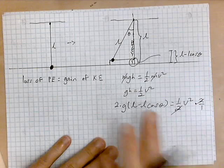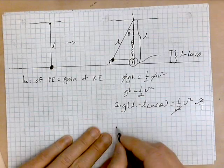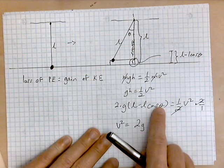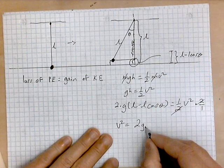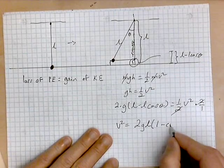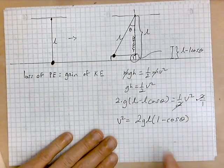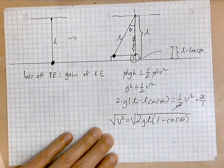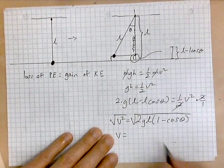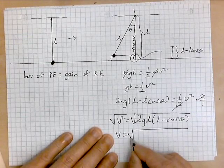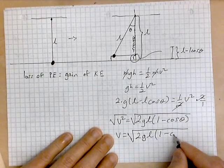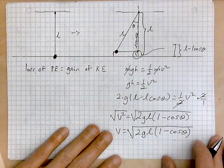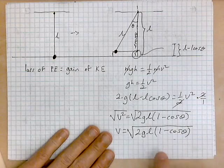We switch v onto one side: v squared equals 2g times the height. Notice that l is common to the two terms, so we can factor it: v squared equals 2g·l·(1 minus cosine theta). Now we take square roots, and what remains is: v equals the square root of 2gl(1 minus cosine theta). This is the speed of the bob at the bottom of the swing.